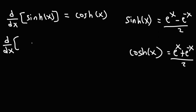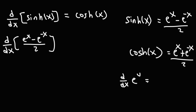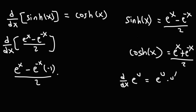To differentiate hyperbolic sine, we differentiate (e^x − e^(−x)) / 2. The derivative of e^u is e^u times u prime. So the derivative of e^x is e^x times 1, which is just e^x. The derivative of e^(−x) is e^(−x) times −1. The two negative signs cancel, giving plus e^(−x) over 2. This simplifies to (e^x + e^(−x)) / 2, which is exactly hyperbolic cosine.